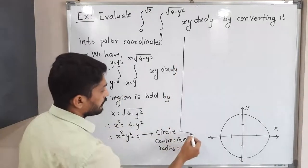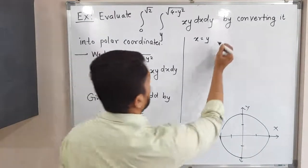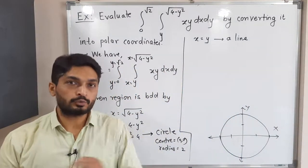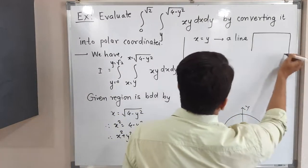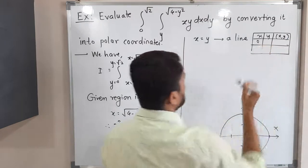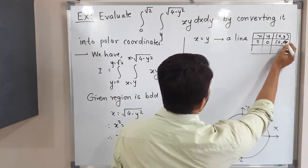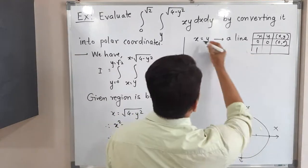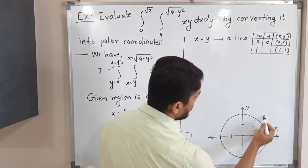Next we have x = y. Since the powers of x and y are both 1, this represents a line. To draw it, we find two points. If x = 0, then y = 0, so the line passes through the origin. If x = 1, then y = 1, giving the point (1, 1).